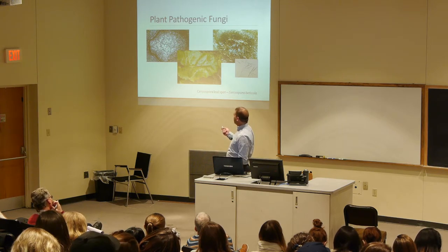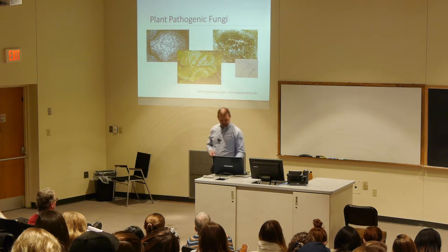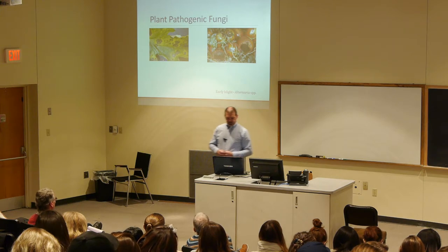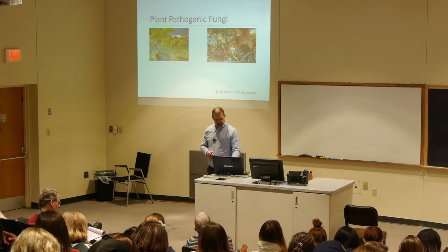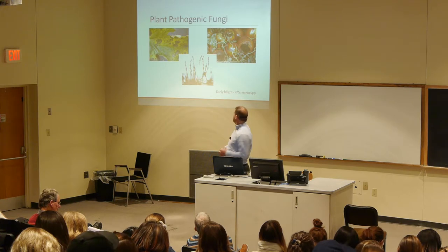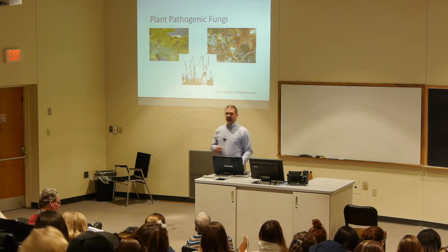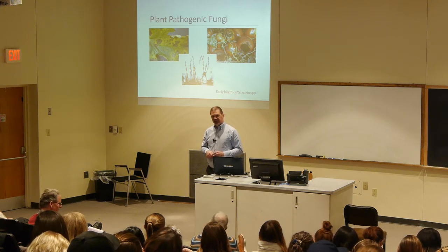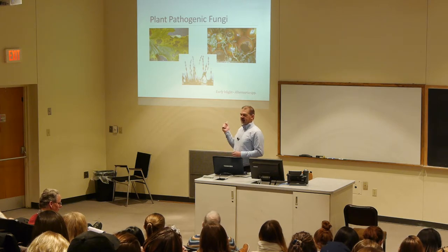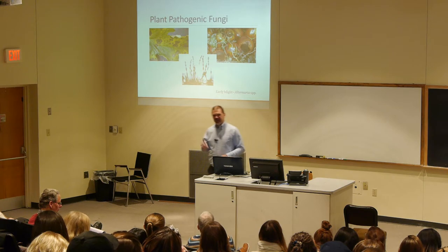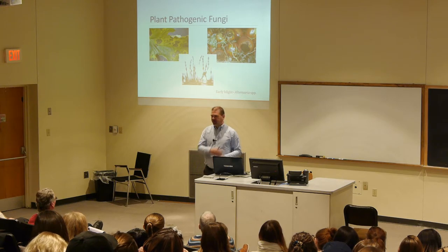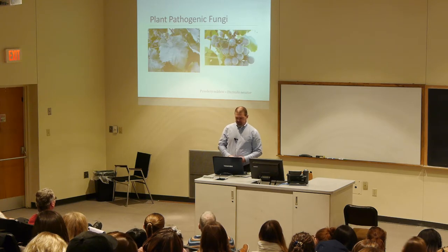This is early blight, caused by Alternaria alternata — actually the first fungus I ever worked on here. It was the first disease I ever diagnosed for a friend who showed me her tomatoes. I said, 'That's early blight — you have to burn all your stuff and bury all your residue.' This is also powdery mildew on grapes — you can see why it's called powdery mildew, with all that powdery residue covering the surfaces, which is all hyphae and spores.